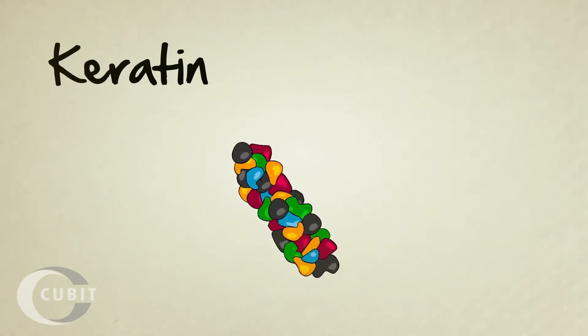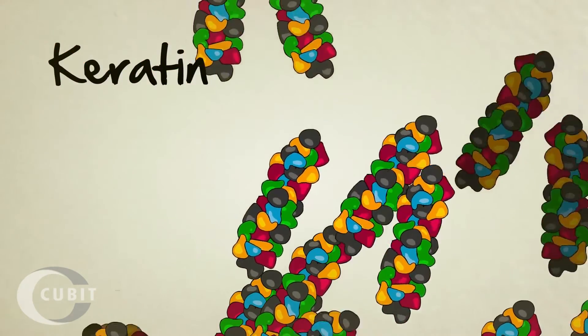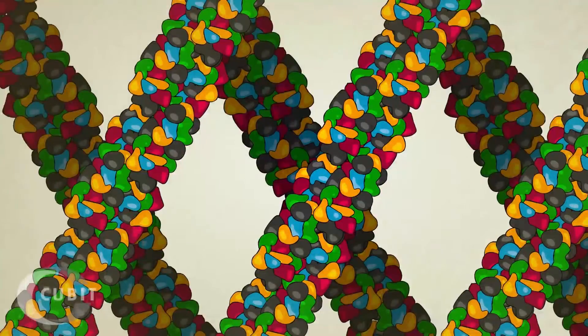Keratin is a structural protein. Its unique shape and size allow it to link together with other keratin proteins to form hard structures like fingernails, claws, and beaks.